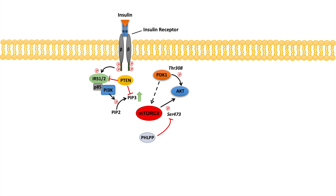The serine 473 phosphorylation site is regulated by PHLPP, and the threonine 308 site is regulated by protein phosphatase 2A. PHLPP and PP2A will dephosphorylate these sites respectively: PHLPP dephosphorylates the serine 473 site, and protein phosphatase 2A dephosphorylates the threonine 308 site. So there are counterbalances in this pathway.